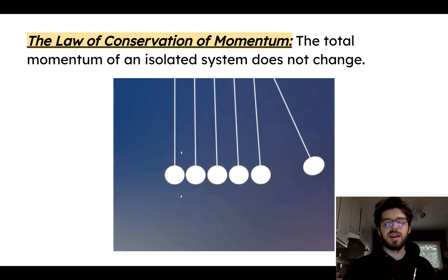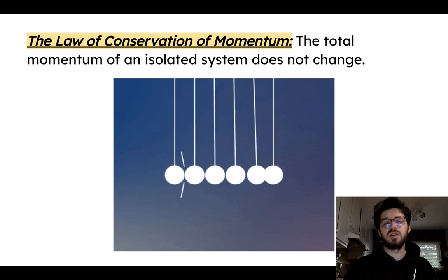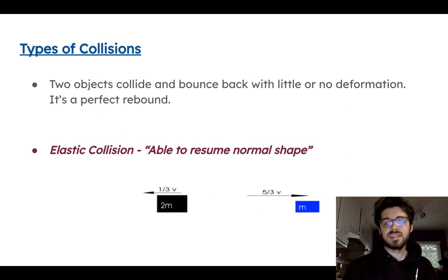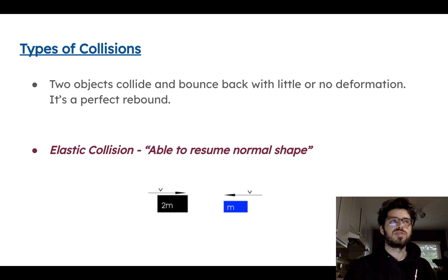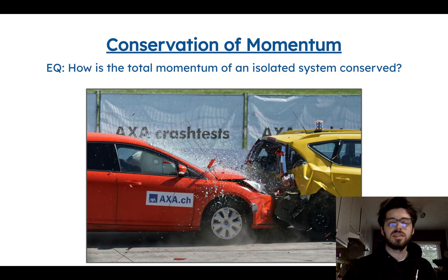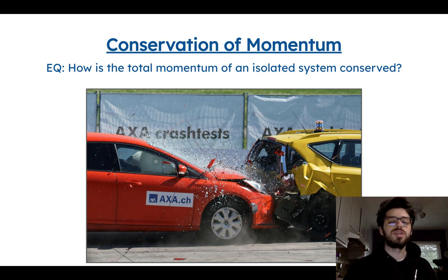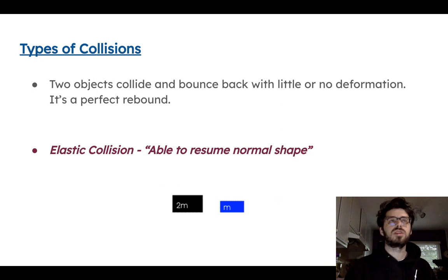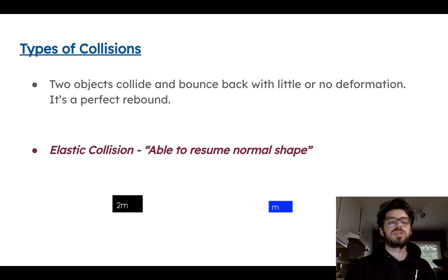Before we go into the activity, I need to define the types of collisions. Fortunately, there are only two types. First, an elastic collision — that's when two objects collide with each other and there's no deformation. If you look at a car crumpling on impact, that is deformation, right? The car crumples to absorb the impact. An elastic collision would be like bumper cars — they just collide and rebound perfectly with no deformation.